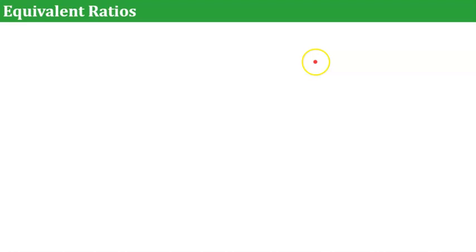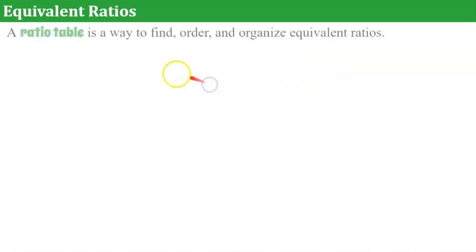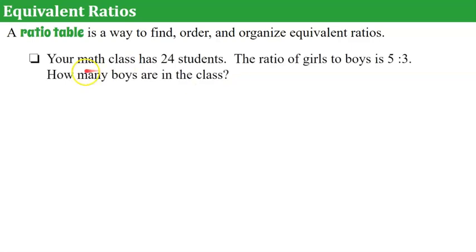Now we're going to discuss equivalent ratios. So these are ratios that are equal to each other. So think of fractions that are not in simplest form. And when you simplify it, it's an equivalent ratio in simpler form. Well, we can extend these using ratio tables as a way to find, order, and organize our equivalent ratios. So let's look at this problem. Your math class has 24 students. The ratio of girls to boys is 5:3. How many boys are in the class?